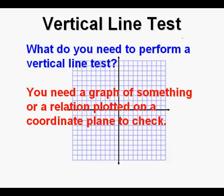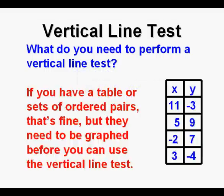of something or a relation plotted on a coordinate plane in order to check it. If you have a table or sets of ordered pairs, that's okay, but they need to be graphed before you can use the vertical line test.